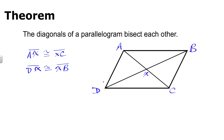Another theorem dealing with parallelograms has to do with diagonals: the diagonals of a parallelogram bisect each other, meaning they cut themselves into two equal parts. In parallelogram ABCD, diagonal AC and diagonal BD meet at point X. This means segment AX is congruent to segment XC, and segment DX is congruent to segment XB. It doesn't say the two diagonals are congruent to each other — just that they each bisect the other.